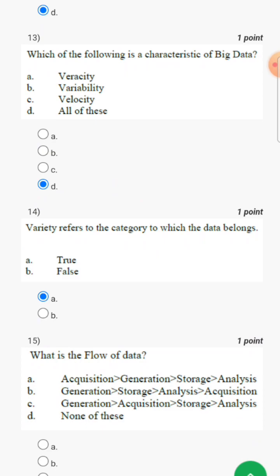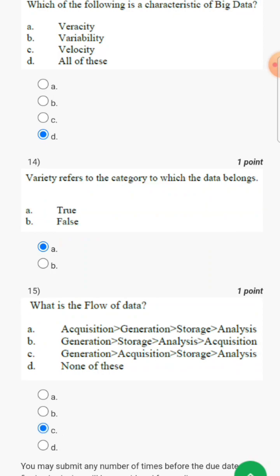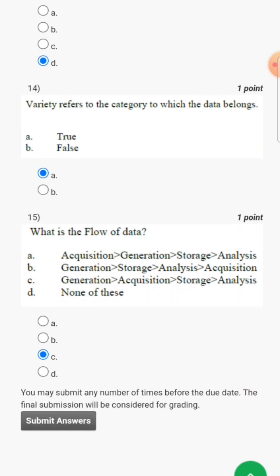So here answer will be generation, acquisition, storage, and analysis. So option C will be correct. Generation, then acquisition, then storage, then analysis - this is the flow of data. So we will submit now.